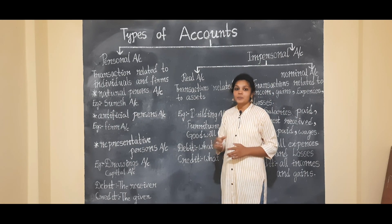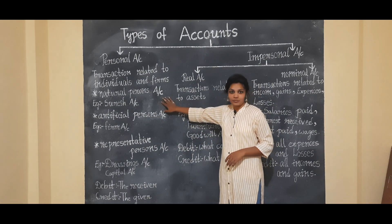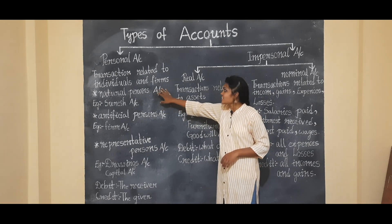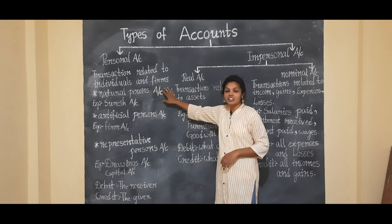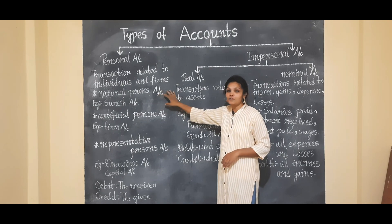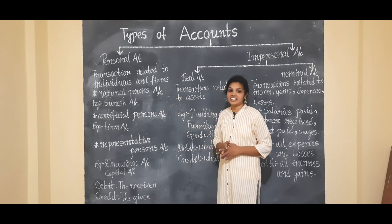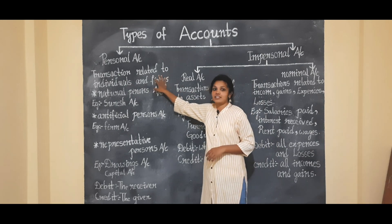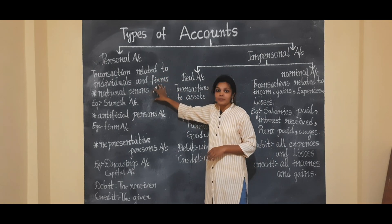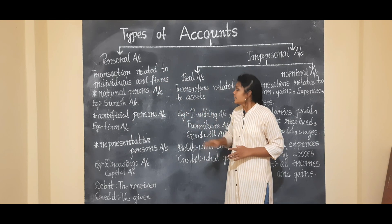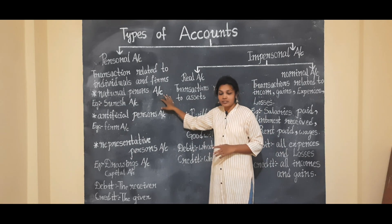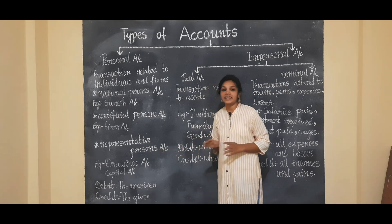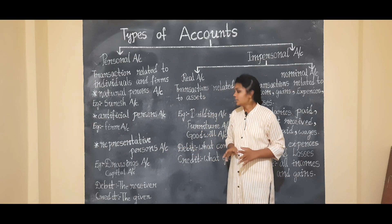First, personal account — transactions related to individuals and firms are recorded in the personal account. Under personal account, there are: natural person account, artificial person account, and representative persons account.